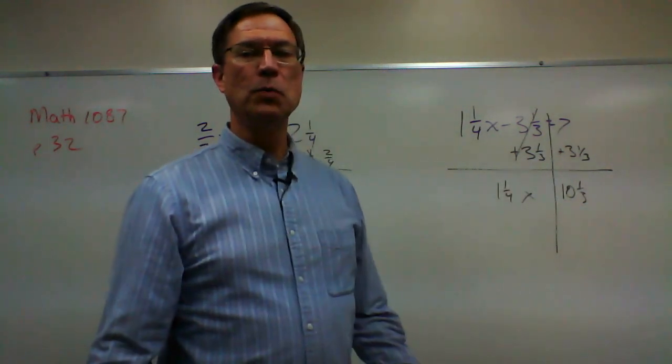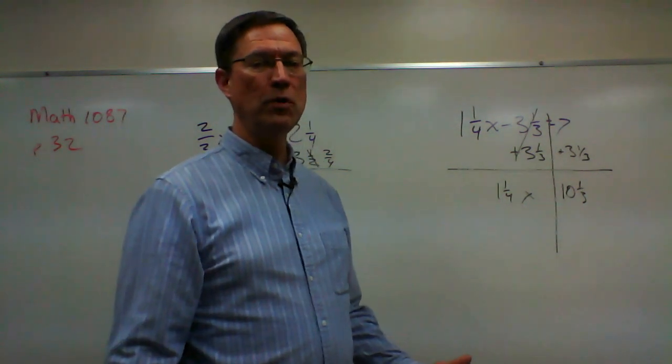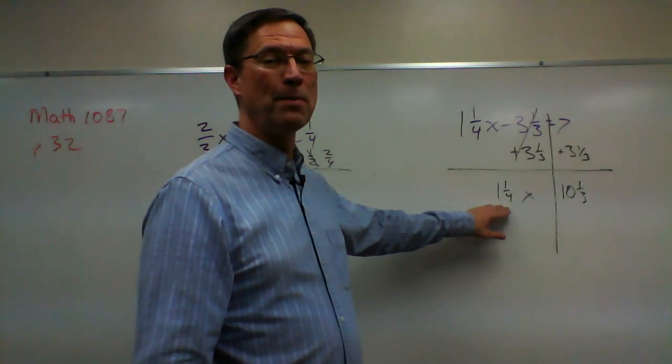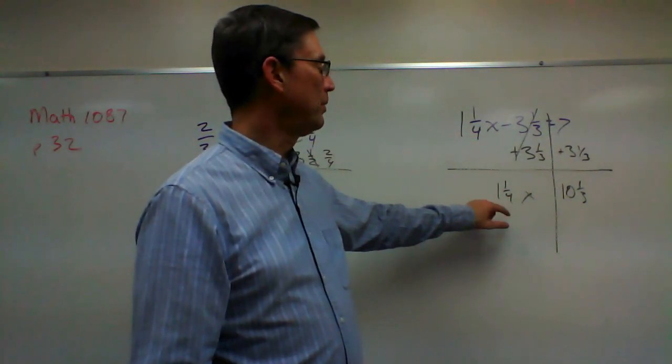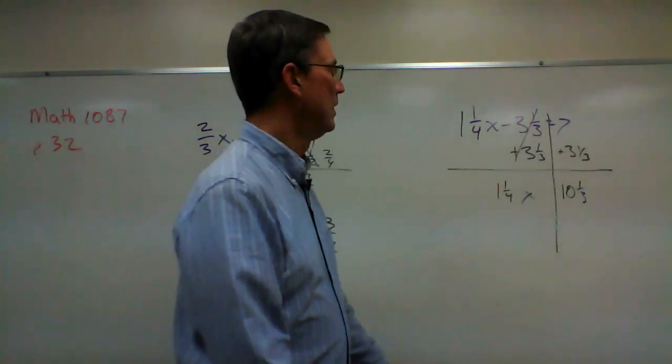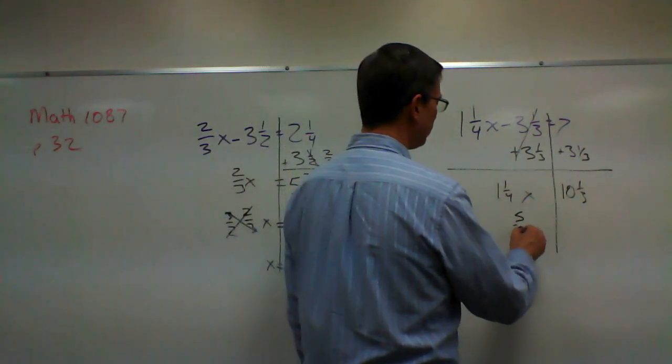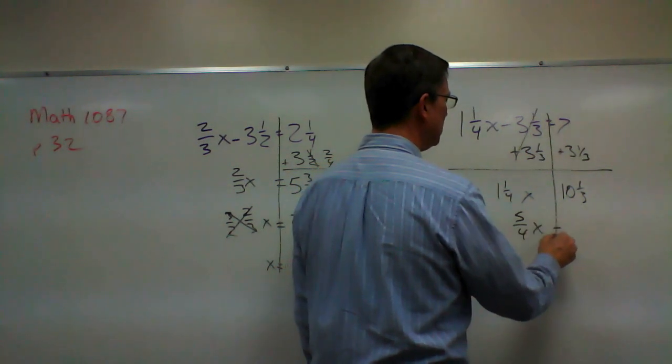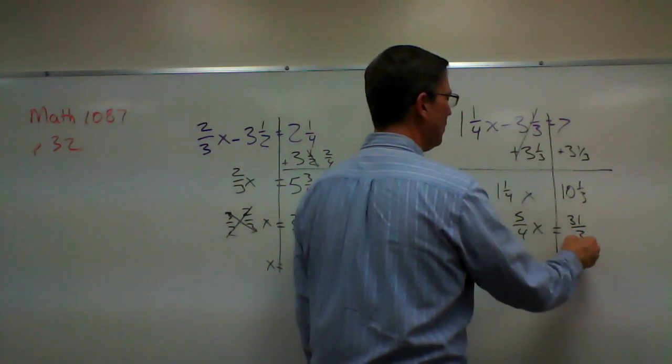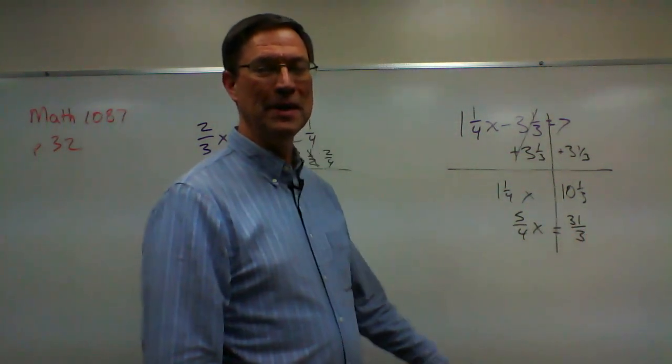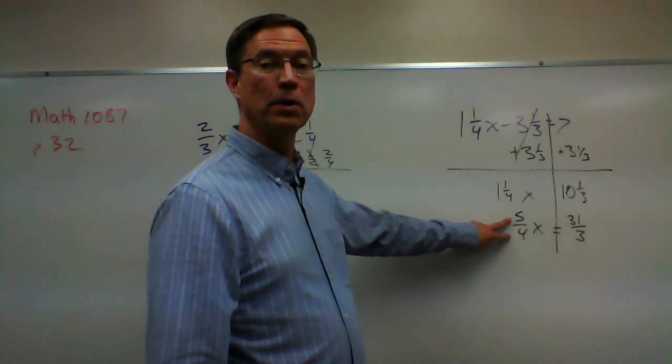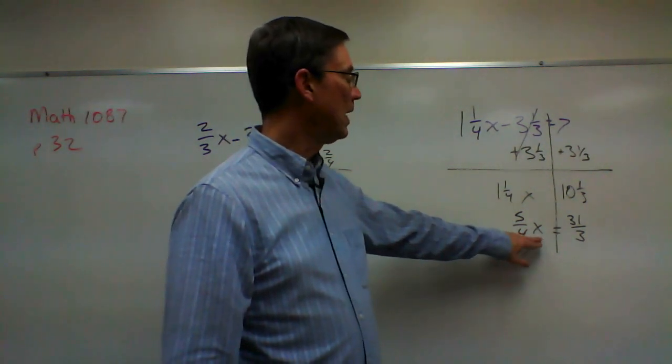Now this is where it gets a little tricky. We just have to remember to turn the mixed numbers into improper fractions. So we have two improper fractions: four times one is four, plus one is five—five fourths x equals three times ten is thirty, plus one, thirty one over three. And then the last step is to multiply by the reciprocal of the one that's in front of x. So multiply by four fifths, do the same thing, four fifths on the other side.